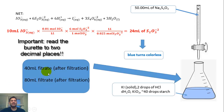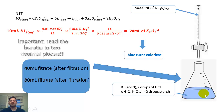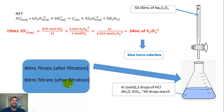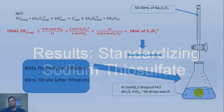You're going to take a gravity filtration of your precipitate. The precipitate is there; you filtered it out. You take some of that precipitate, put it in 40 mL. Then you take some from the 80 mL filtrate, take 10 mL of that, and put it in the flask.